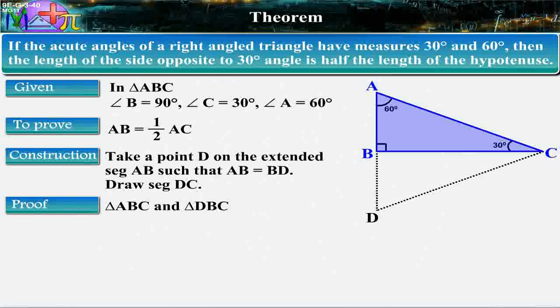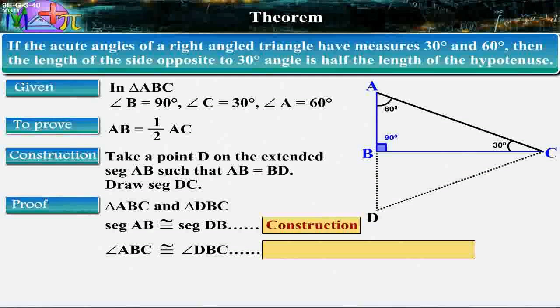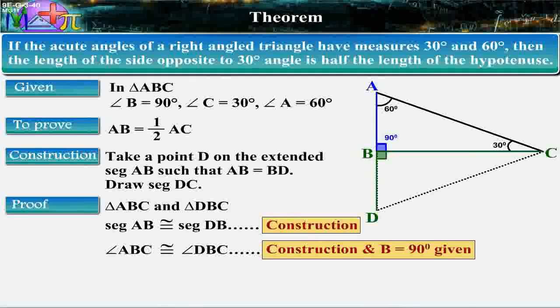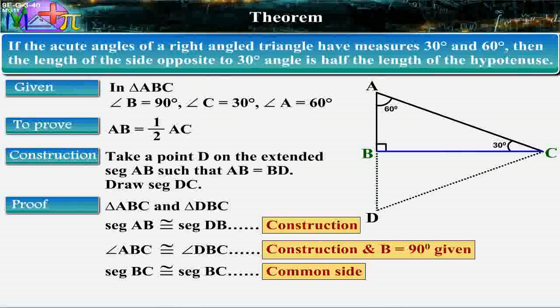Proof: Triangle ABC and triangle DBC. Segment AB is congruent to segment DB by construction. Angle ABC is congruent to angle DBC, construction and angle B is equal to 90 degrees given. Segment BC is congruent to segment BC, common side.